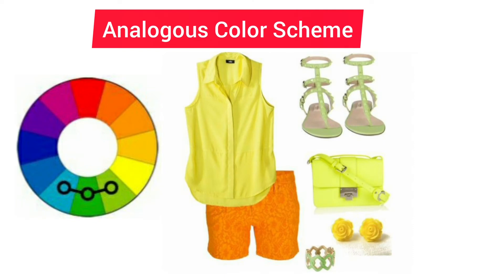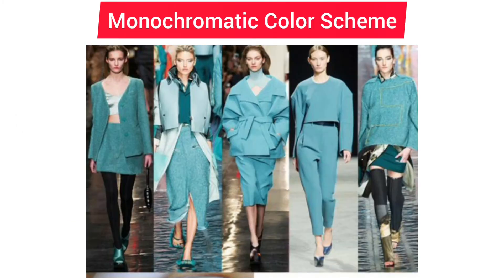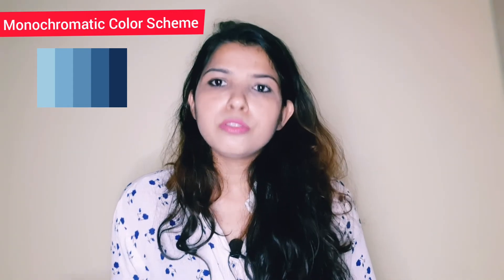Now we talk about the monochromatic color scheme. In this scheme, the colors are the same, and they use tints and shades. Tints are made by mixing white into the color, and shades are made by mixing black. As you add tints or shades to a color, you get different varieties of that same color.